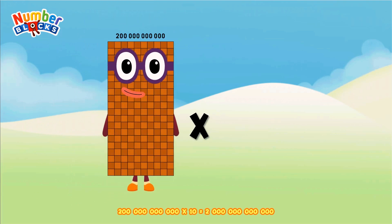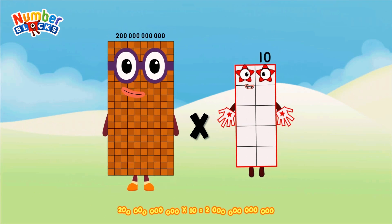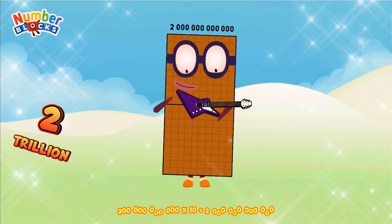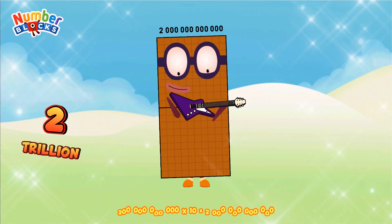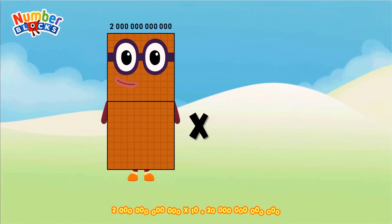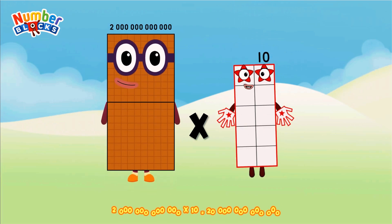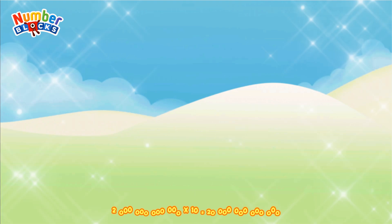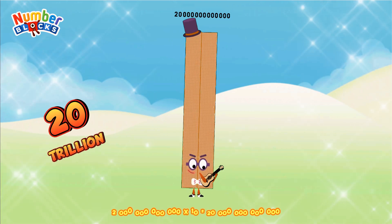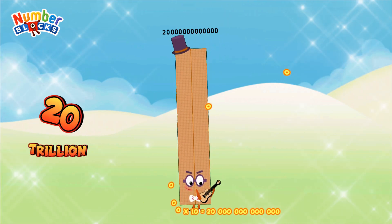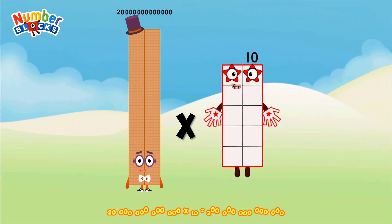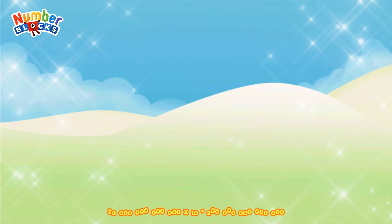200 billion multiplied by 10 equals 2 trillion. 2 trillion multiplied by 10 equals 20 trillion. 20 trillion multiplied by 10 equals 200 trillion.